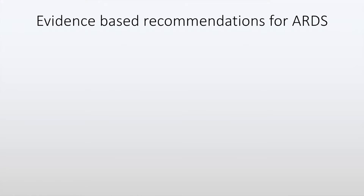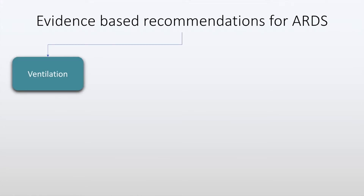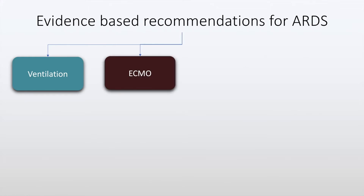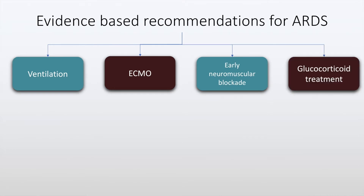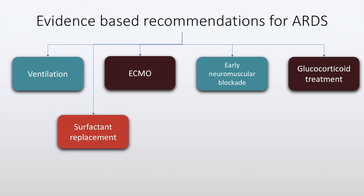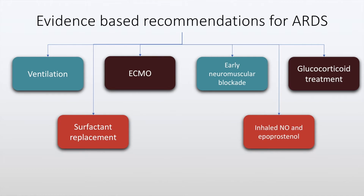Let us now discuss evidence-based recommendations for the treatment of Acute Respiratory Distress Syndrome. The evidence includes discussion of ventilatory strategies, extracorporeal membrane oxygenation, early neuromuscular blockade, glucocorticoid treatment, surfactant replacement, and inhaled nitric oxide and iloprostenol. Of these, early neuromuscular blockade seems to have a class 1 recommendation.